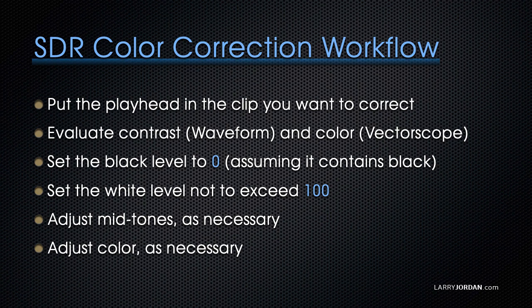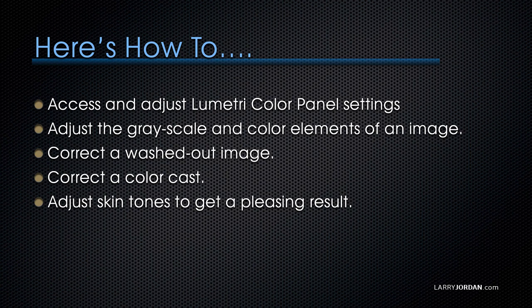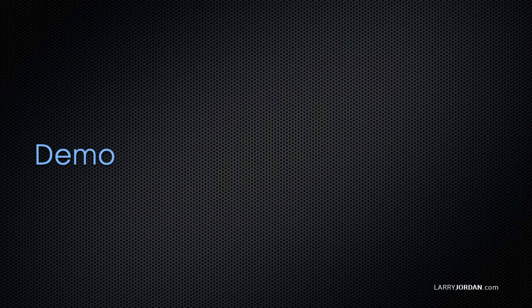Here's the step-by-step. Put the playhead in a clip you want to correct. Evaluate the contrast using the waveform monitor and the color using the vectorscope. Set the black level to zero, assuming the shot contains something that is grayscale black. Set the white level not to exceed 100%, assuming something is that bright. Adjust the mid-tones as necessary, and after the grayscale values are adjusted, adjust the color. Here's how to access and adjust the Lumetri color panel settings, how to adjust grayscale and color elements, how to correct a washed-out image, how to correct color cast, and how to adjust skin tones for a pleasing result.